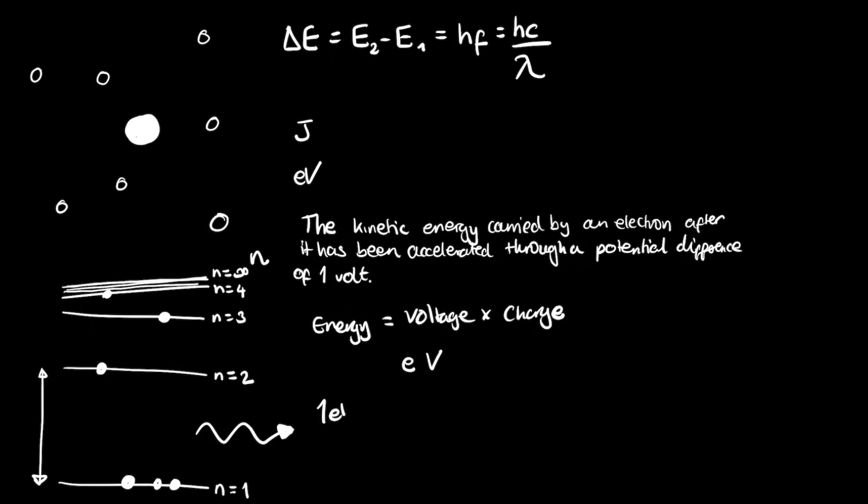And one electron volt is simply equivalent, if we think about it, one electron has a charge of 1.6 times 10 to the minus 19 coulombs. So if we simply multiply that by one volt, then we're going to find that one electron volt is 1.6 times 10 to the minus 19 joules. And this is a very useful conversion. You'll probably find that you'll have to convert between joules and electron volts quite often.